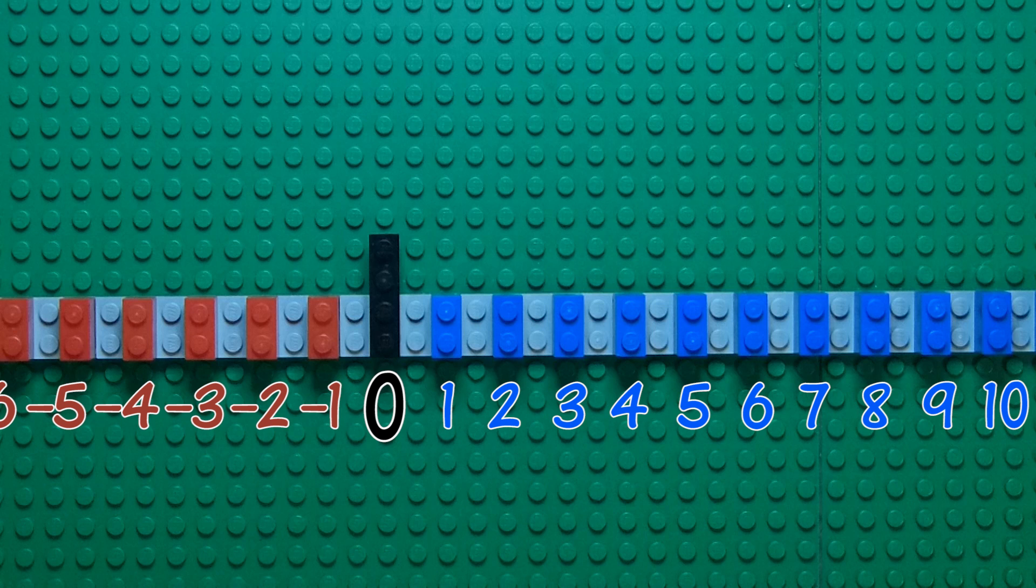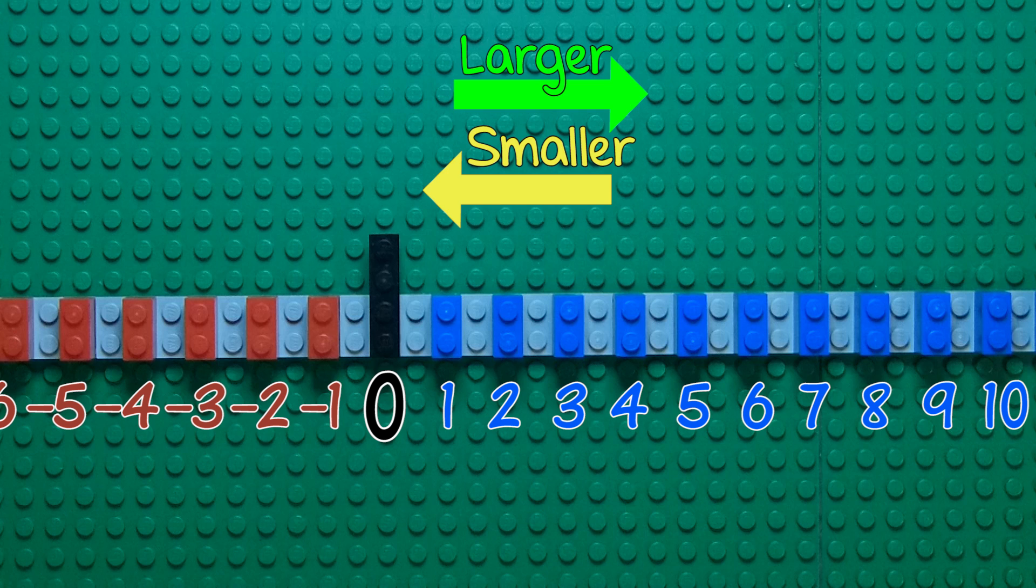Writing numbers down on a number line makes it easy to tell which numbers are bigger or smaller. Numbers on the left are smaller than numbers on the right.